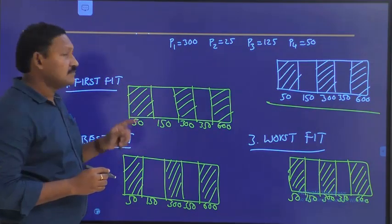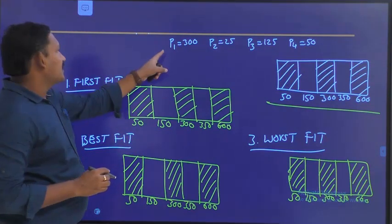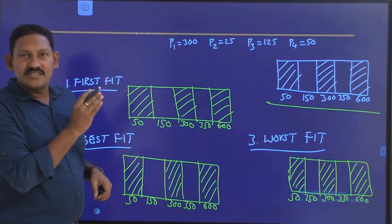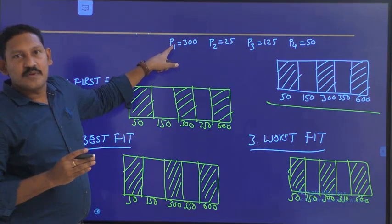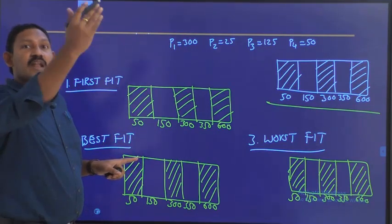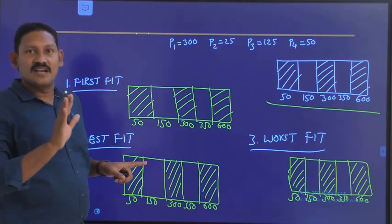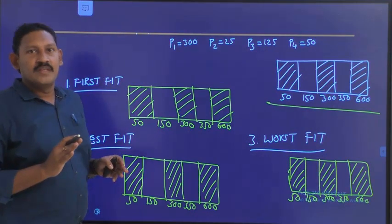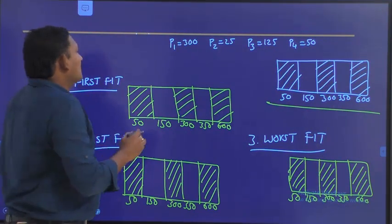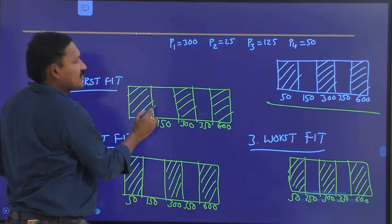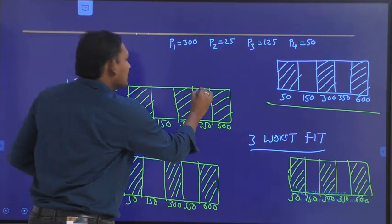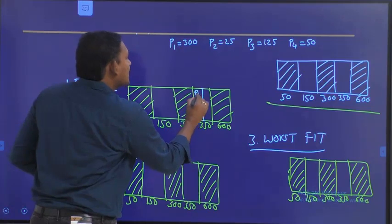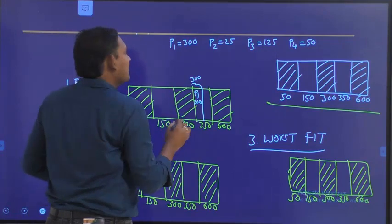In first fit, what we do is we will move from left to right. If the first block is sufficient for inserting process P1, we will use that. We don't check whether there might be another block which may be better. If we see the first empty block and it is sufficient for inserting our process, we will insert there. For P1, we have two blocks. First we check 150 — it's not enough. We go to 350 — yes, this is sufficient. So we insert P1 here. Its capacity is 300, with 50 remaining available space.